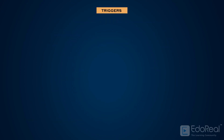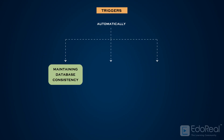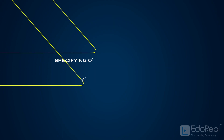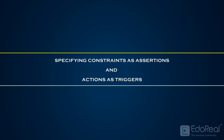Triggers can be used in various applications, such as automatically maintaining database consistency, monitoring database updates, and updating derived data. In this video, we have discussed specifying constraints as assertions and actions as triggers.